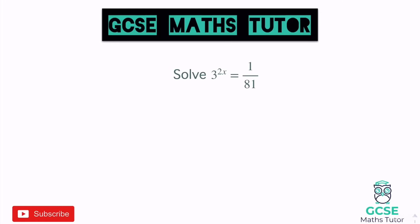When it comes to this question, we want to know what power of 3 gives us 1 over 81. There are three elements to a fractional power — for example, 3 to the power of minus two-thirds. The negative does the reciprocal and flips it over. The denominator does the root — I think of that as underground, beneath the fraction line. The numerator is the normal power, so it would square the number.